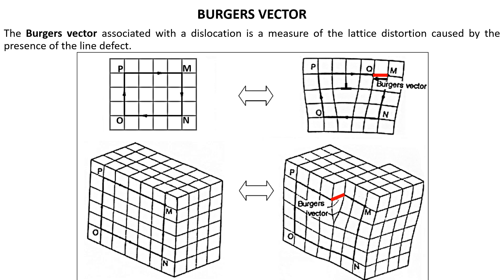This vector difference between the start and end point of the Burgers circuit is called a Burgers vector, and it represents the magnitude and direction of the lattice distortion caused by the dislocation.